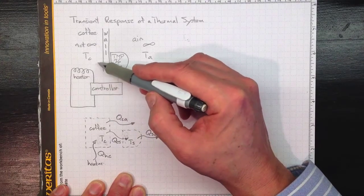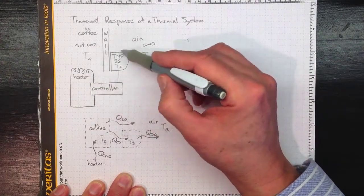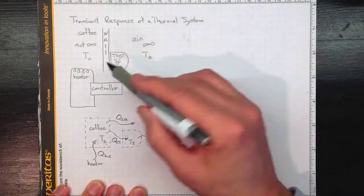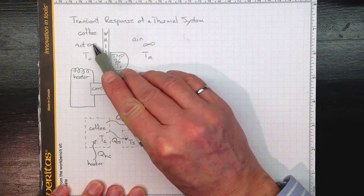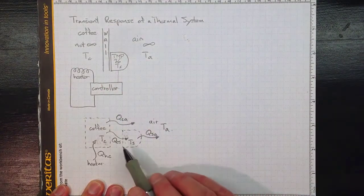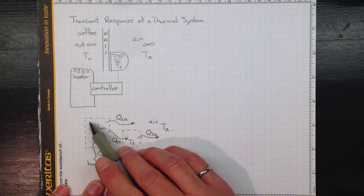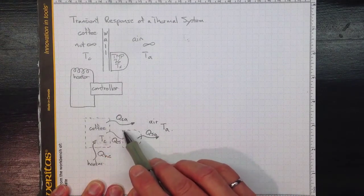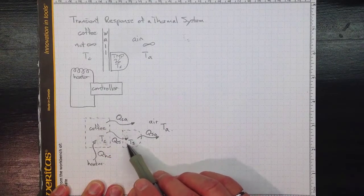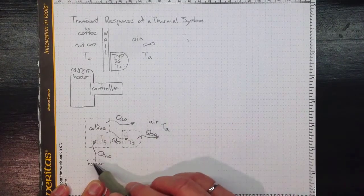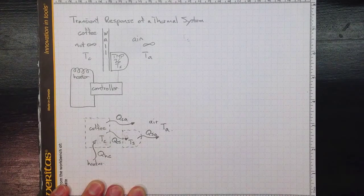So we can do the same kind of balance that we did when we looked at just the sensor and how its transient response behaved, except this time we're going to have to follow both the transient response of the coffee and the sensor. So if we do two control masses, we'll have a mass of coffee and cup here and here's the mass of the sensor, and they're interacting with each other and they're both interacting with the air. In addition, the heater is interacting with the coffee.